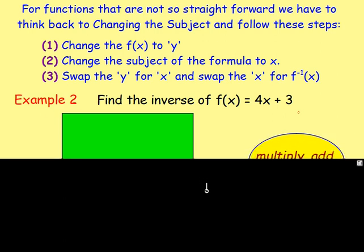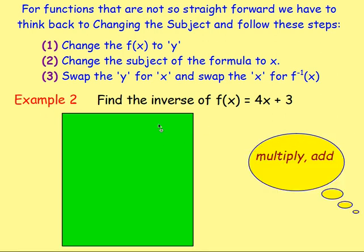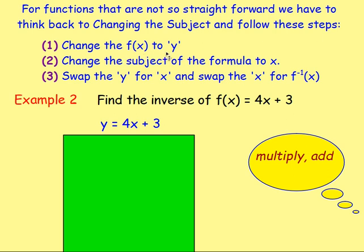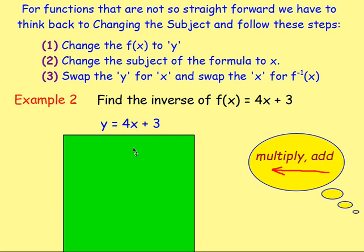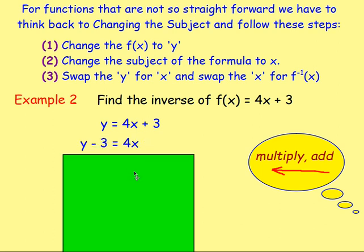Some of you may be able to do this in your head, but these are the steps to follow to make sure you don't make a mistake. First, swap f of x for y — so instead of f of x equals, write y equals. After that, change the subject of the formula to x. You're looking at the right-hand side thinking: what am I doing to x? I'm multiplying by four and adding three. When you change the subject, you reverse that — undo these bits. So first undo the add: subtract three from both sides.